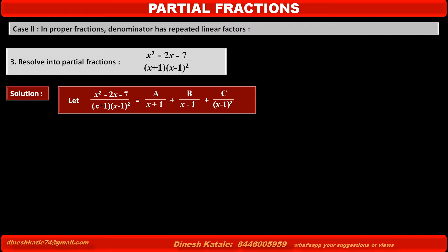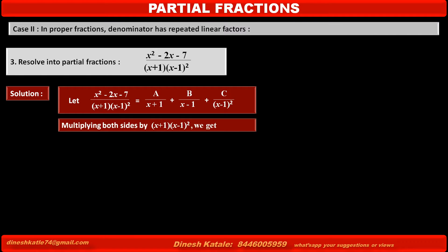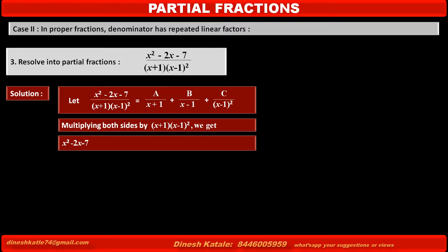Now, to remove the denominators of each term of this equation, multiply both sides by (x+1)(x-1)², which is the LCM of the denominators of the above equation.